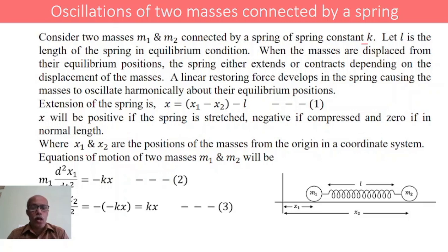Here x1 and x2 are the positions of the masses from the origin in the coordinate system. From the origin, we are measuring the distances of m1 and m2 as x1 and x2 respectively.